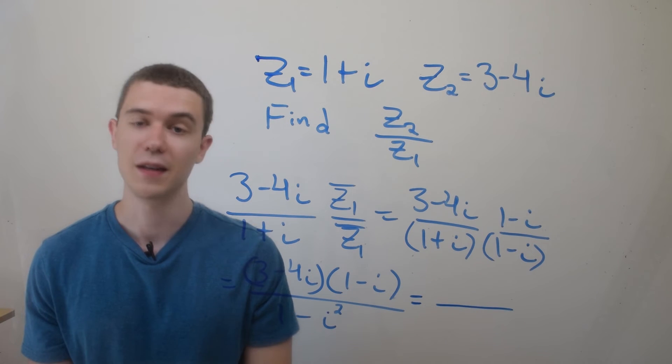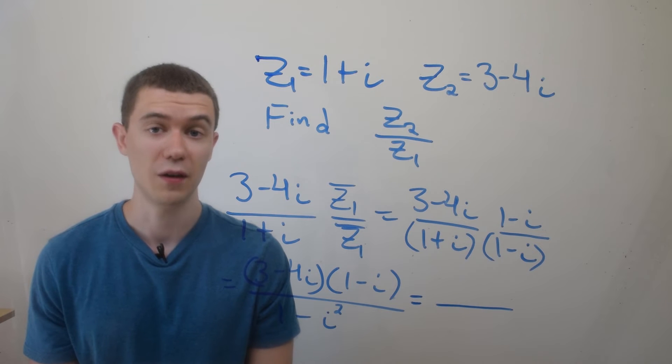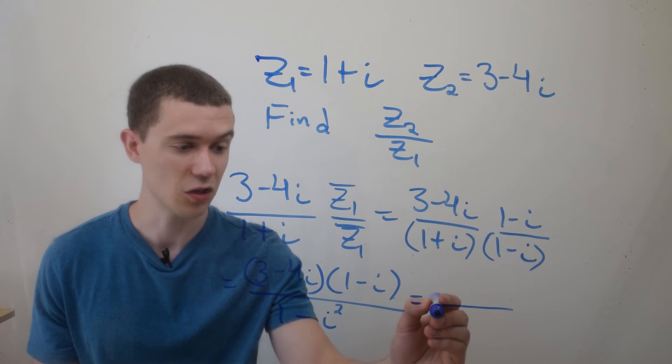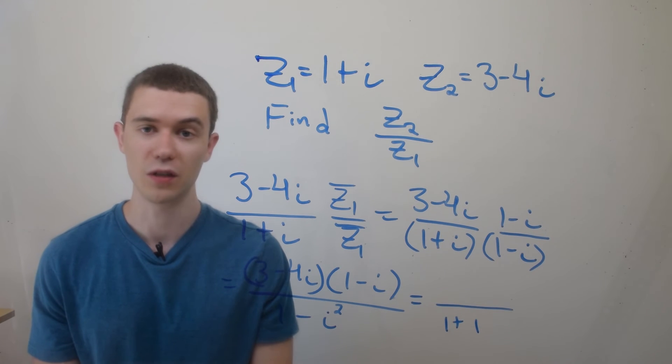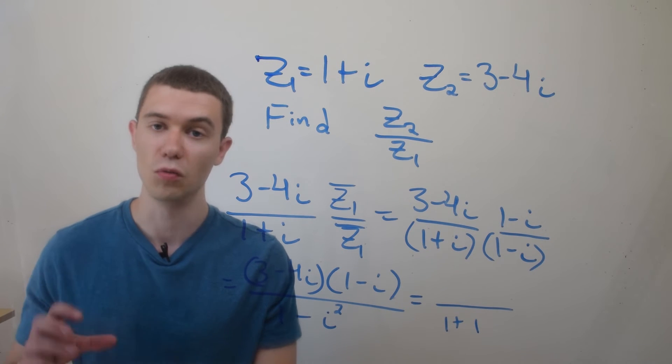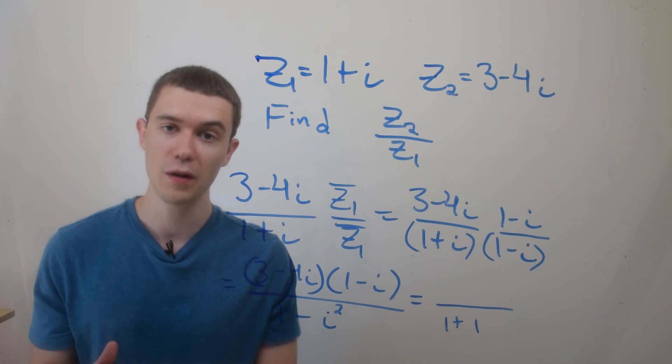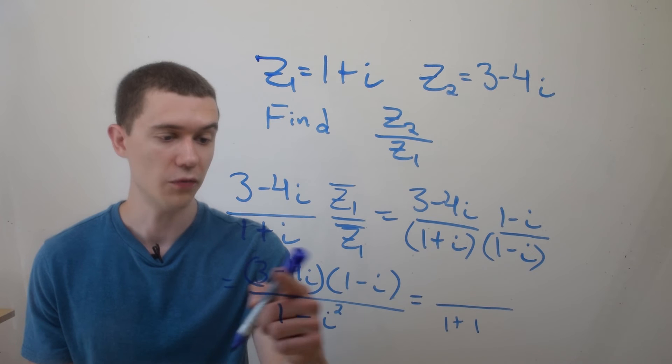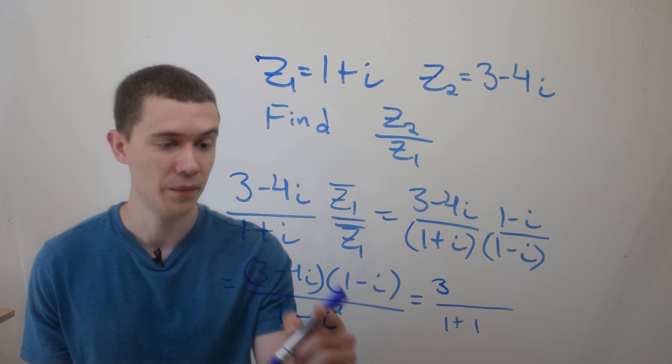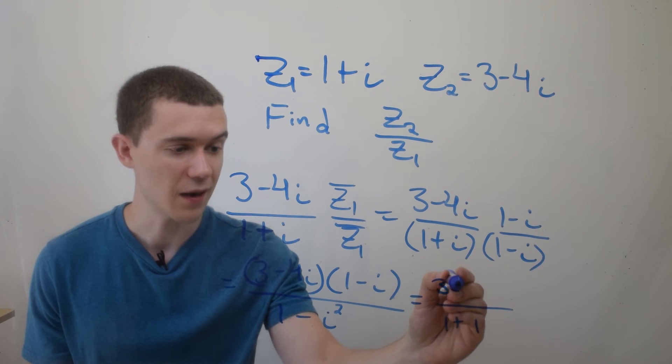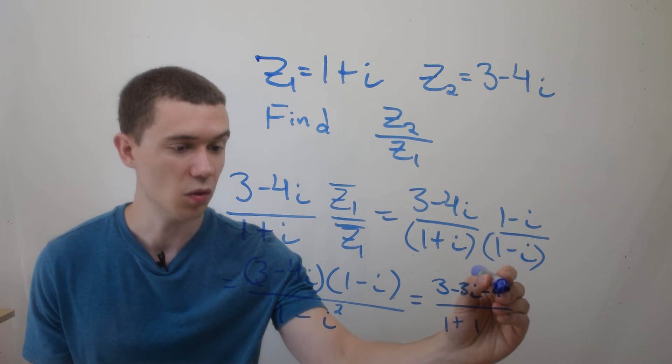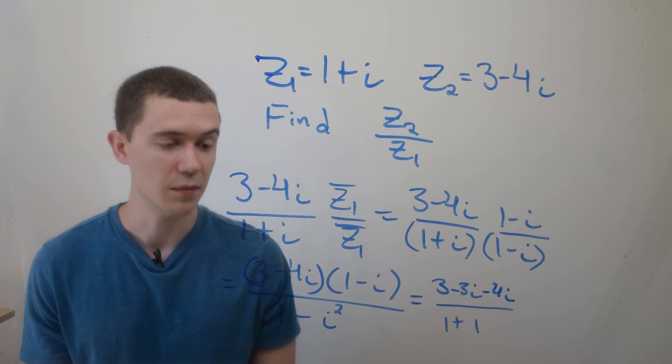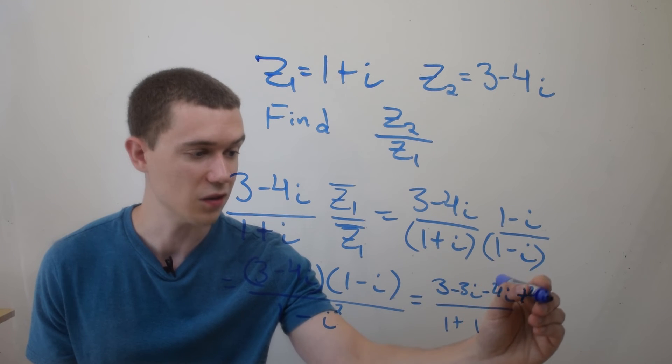Now, this is nice because in the denominator, remember, i squared is negative 1. So this is actually 1 plus 1. And in the top, now we just have a multiplication of complex numbers. So if you think back to the last video, we use the distributive property and we sort of foil this out and combine like terms. So if I foil this, 3 times 1 is 3, 3 times minus i is minus 3i, minus 4i times 1 is minus 4i. I have minus 4i times minus i is going to be plus 4i squared.